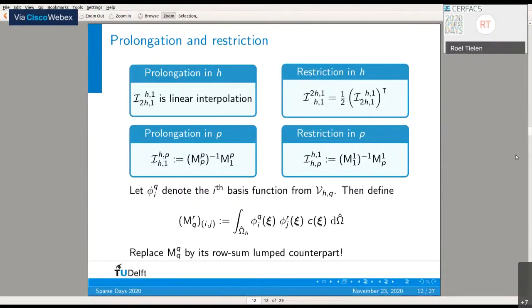To prolongate between different P-levels, we have a slightly different operator which consists of two parts: a rectangular matrix and the inverse of a mass matrix, based on L2 projection. It's important to notice we're not really solving a linear system here, but applying row sum lumping, which can be done because we have the partition of unity property and all mass matrix entries are positive. We use a lumped L2 projection to prolongate and restrict between different P-levels.